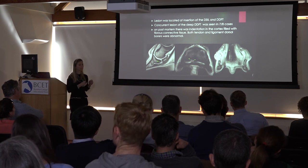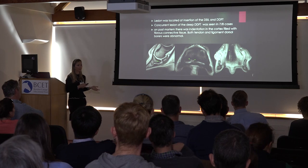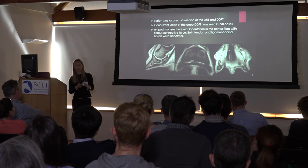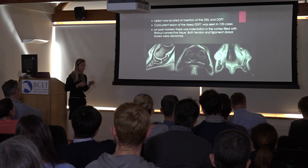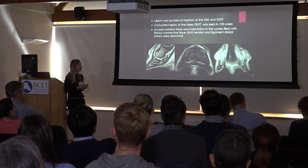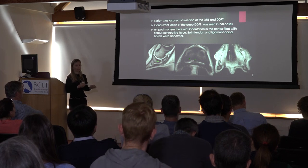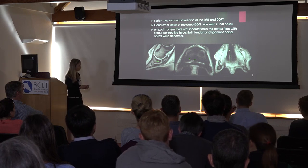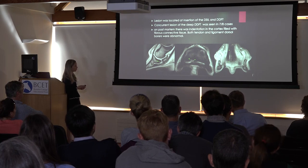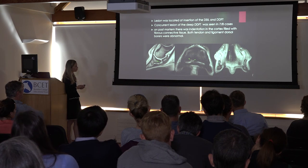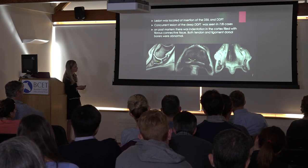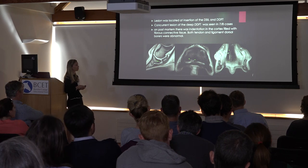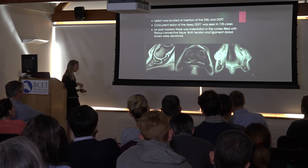The osseous resorption lesion at the impar ligament insertion appears on MRI as a hyperintense lesion surrounded by sclerosis on STIR sequences. It is usually located on the midline, though occasionally slightly off-midline. These horses typically also have a concurrent tendon lesion, though the tendon lesion is not necessarily at the insertion itself.